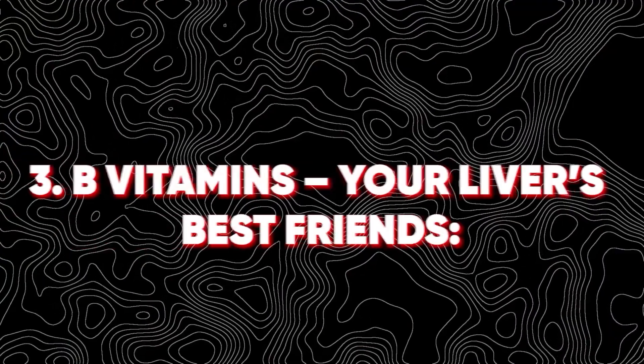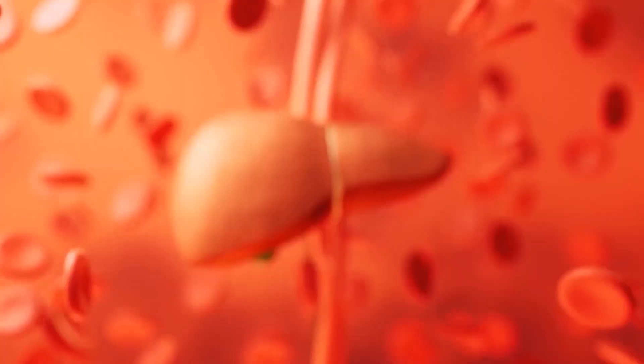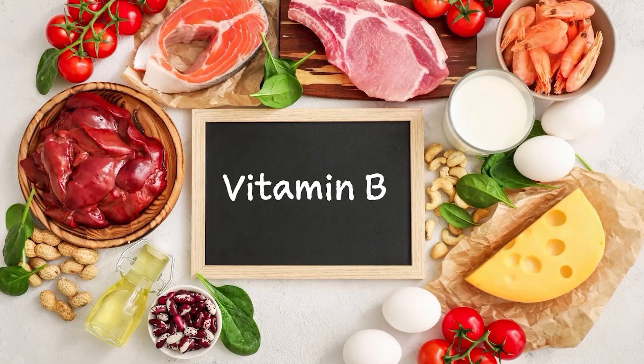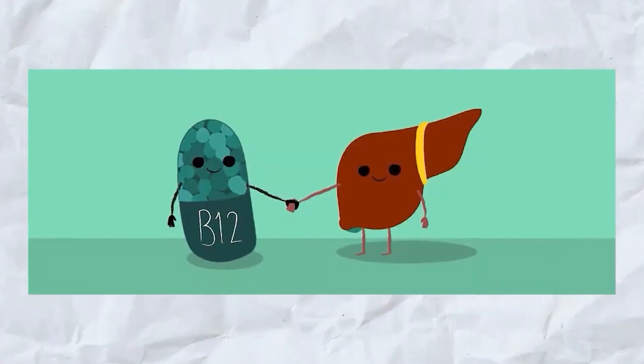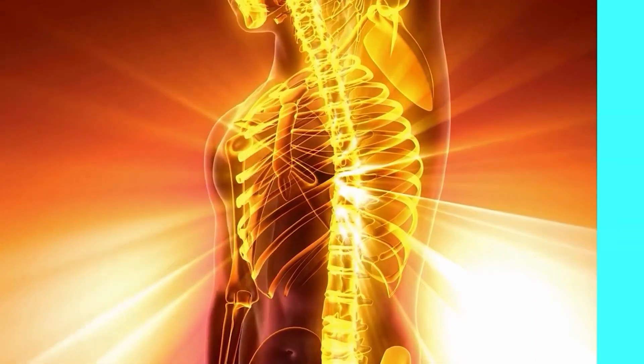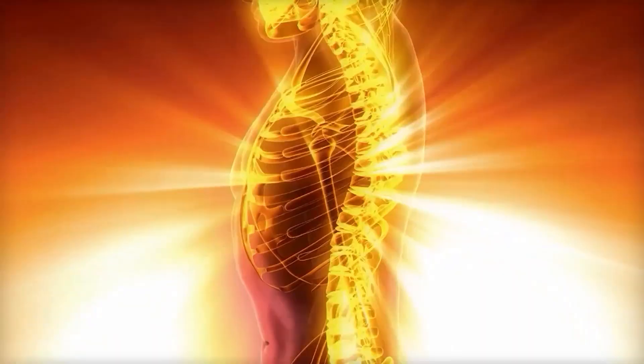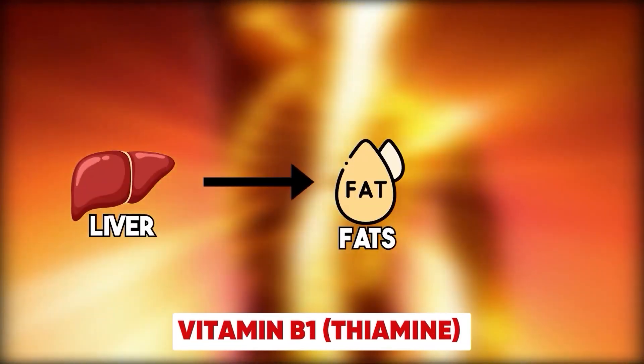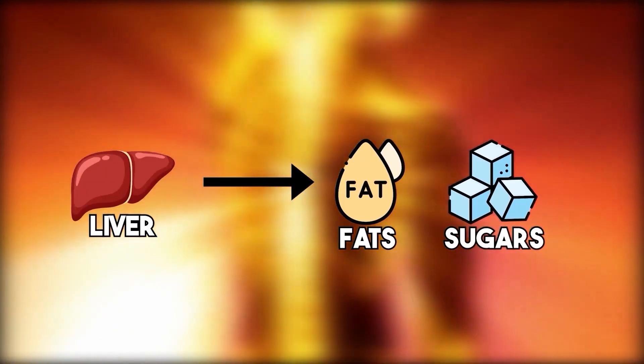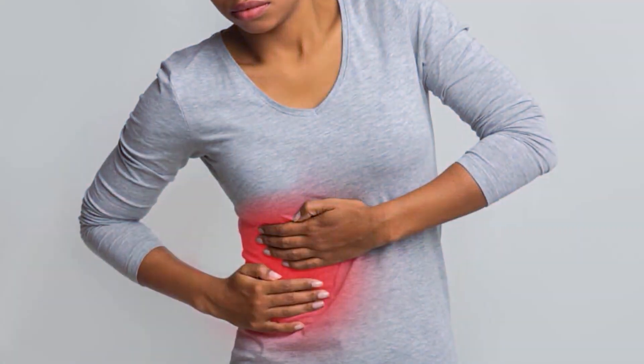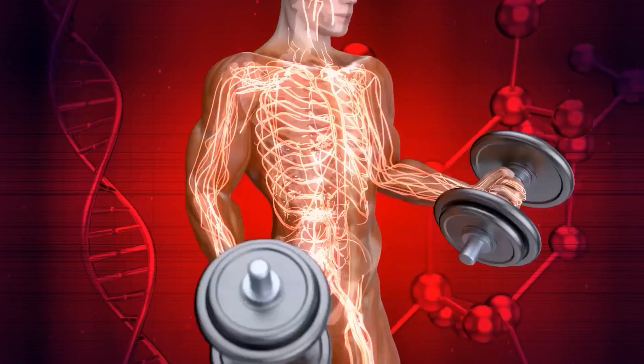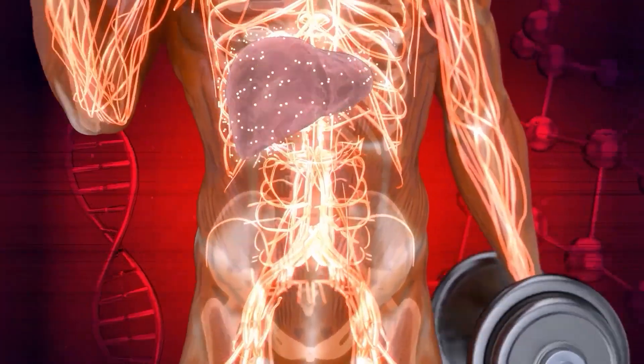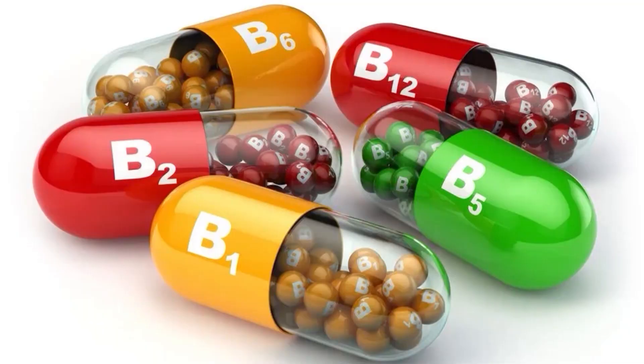B vitamins, your liver's best friends. When it comes to liver health, B vitamins are absolutely essential. They work together to help your liver function at its best and support your overall well-being. Take vitamin B1, thiamine for example. It plays a critical role in how the liver processes fats and sugars. When your body has enough of it, your liver can manage nutrients more effectively, helping prevent fat buildup that leads to liver trouble.